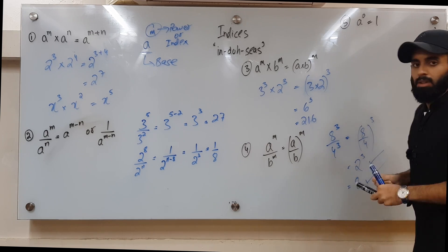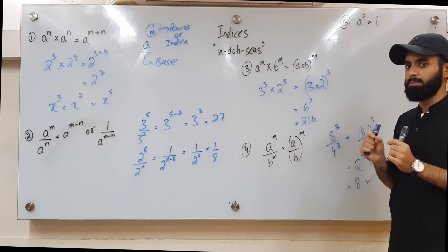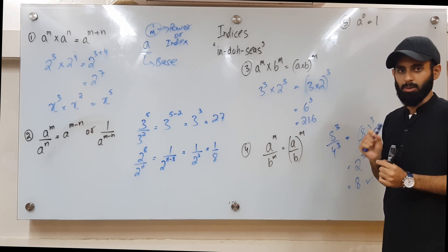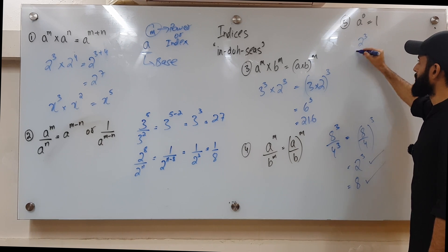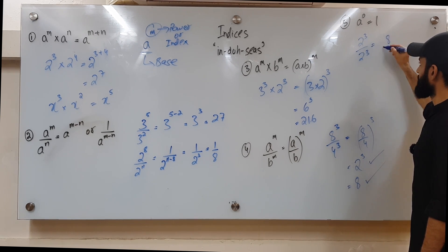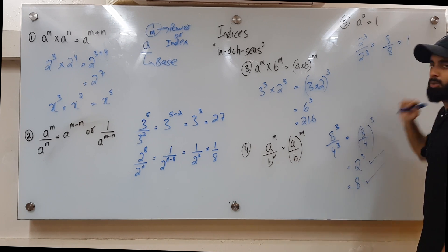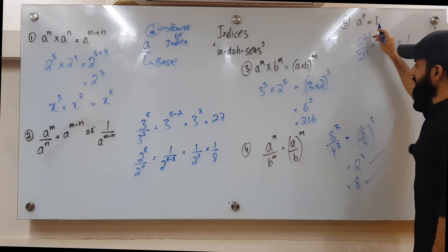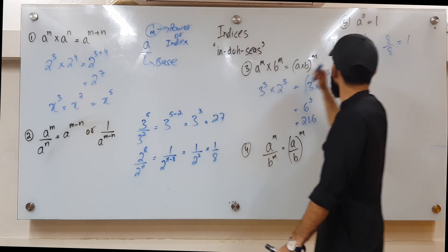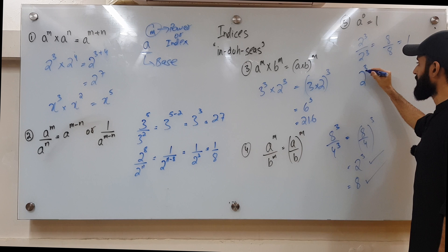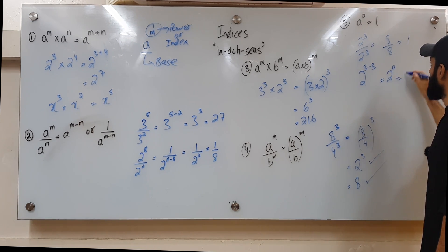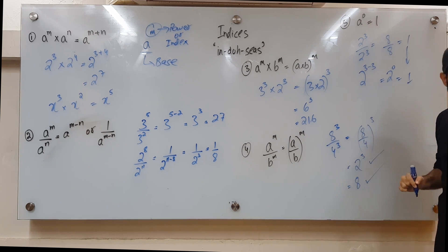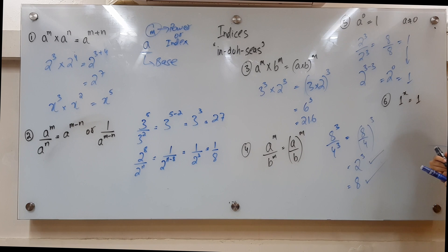Rule number five: absolutely anything raised to the power of 0 is equal to 1. Here's why: take 2 cubed over 2 cubed — evaluating gives 8 over 8, which equals 1. But using rule two, this is 2 to the power 3 minus 3, which is 2 to the power 0. Since both approaches give 1, anything to the power 0 equals 1.